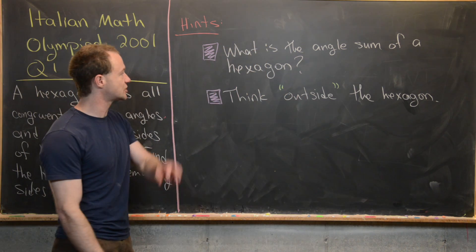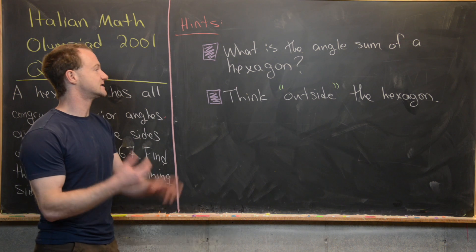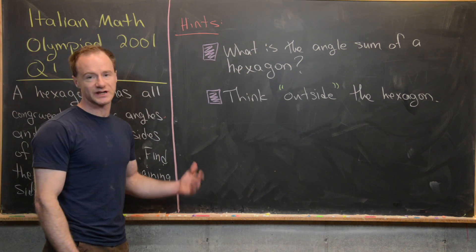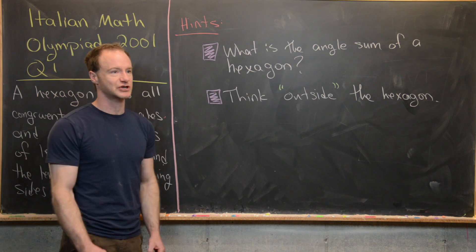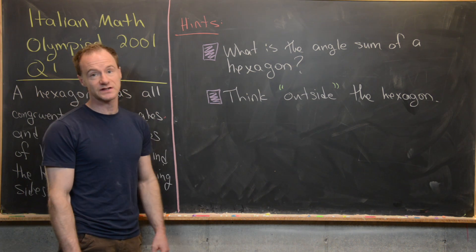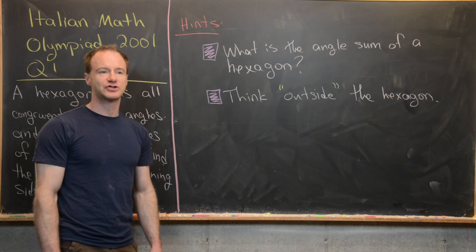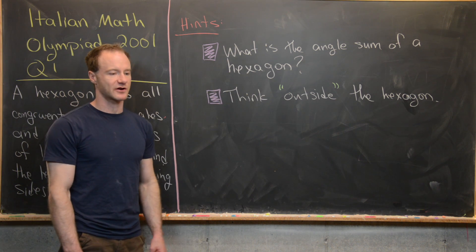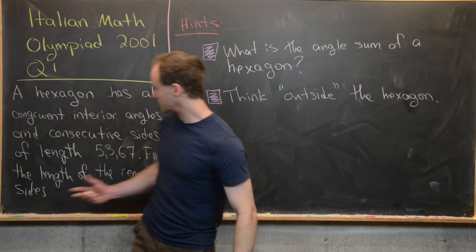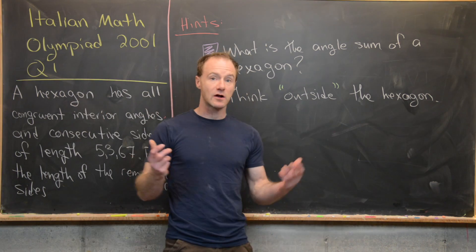we look at a full solution. So the first hint is what is the angle sum for a hexagon? There's a standard formula that you should keep in mind whenever you're working on geometry problems involving polygons on these kind of competitions. There's a formula that allows you to write down the sum of the interior angles of an n-gon in terms of n.